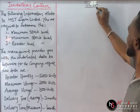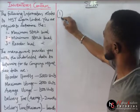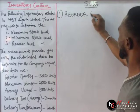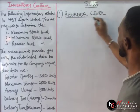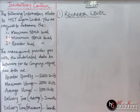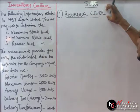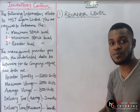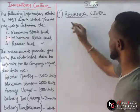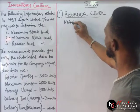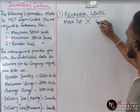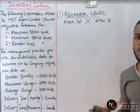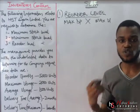Solutions. The first thing we are going to solve is the reorder level. We write the formula: reorder level equals maximum delivery period times maximum usage. Please don't abbreviate in the exam.